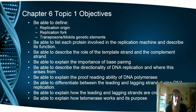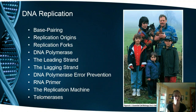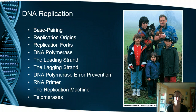So first we have our objectives. As always, these are what I expect you to have mastered before our next exam, so please let me know if you have any questions. This topic is all about DNA replication, and the main points we're going to cover are: base pairing, replication origins, replication forks, DNA polymerase, the leading strand, the lagging strand, error prevention, the RNA primer, and then we'll review the whole thing and wrap up with telomerases.